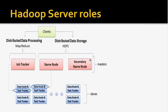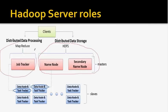Returning to the content: there are two different products in Hadoop. One is HDFS — the distributed file storage layer — and the other is MapReduce, which is the processing layer. Let's talk about these two different layers separately.